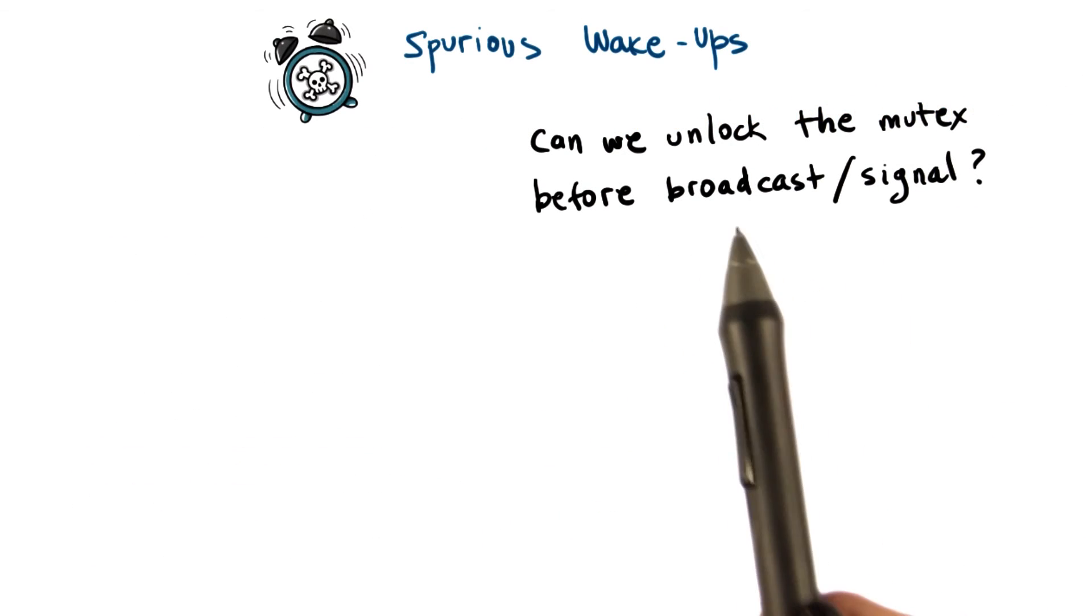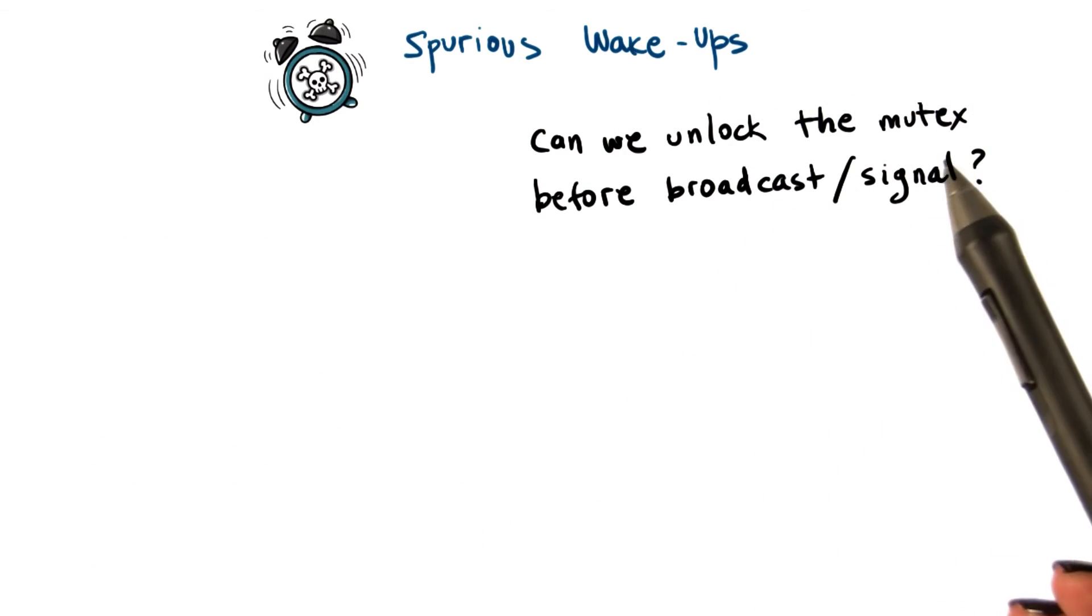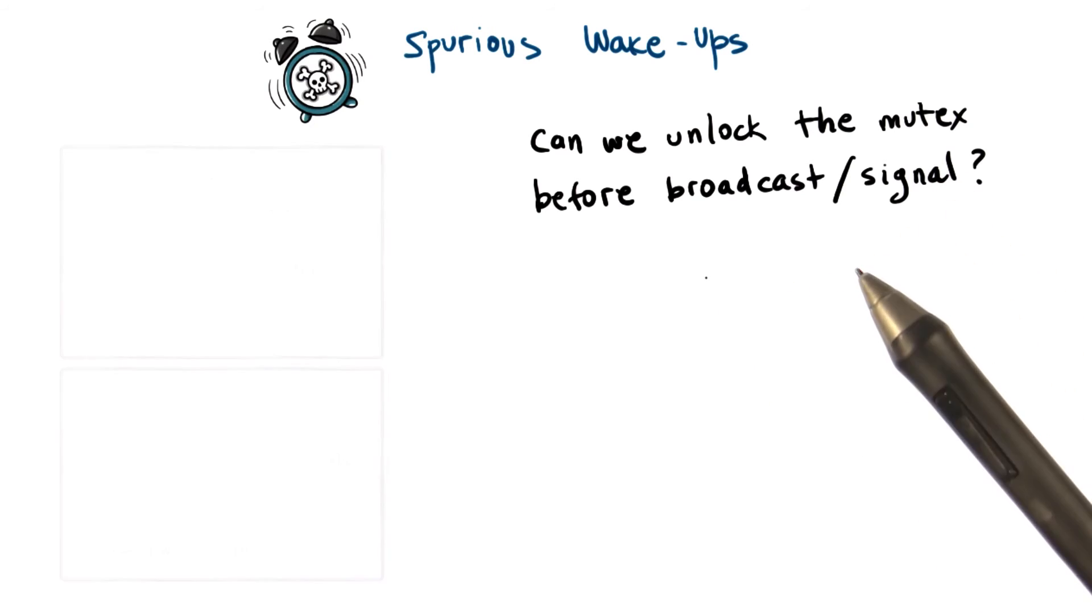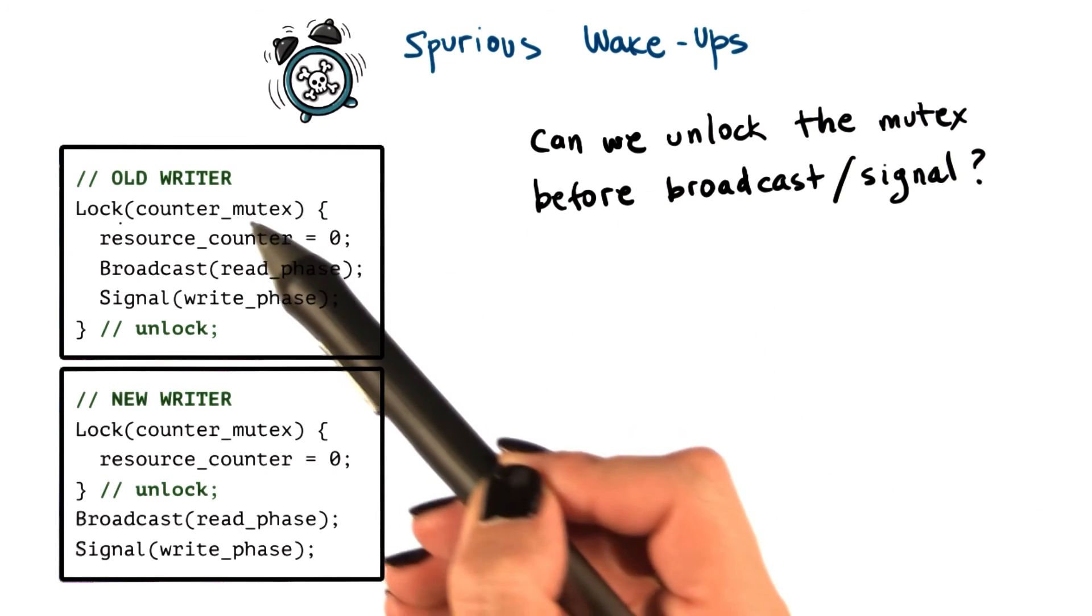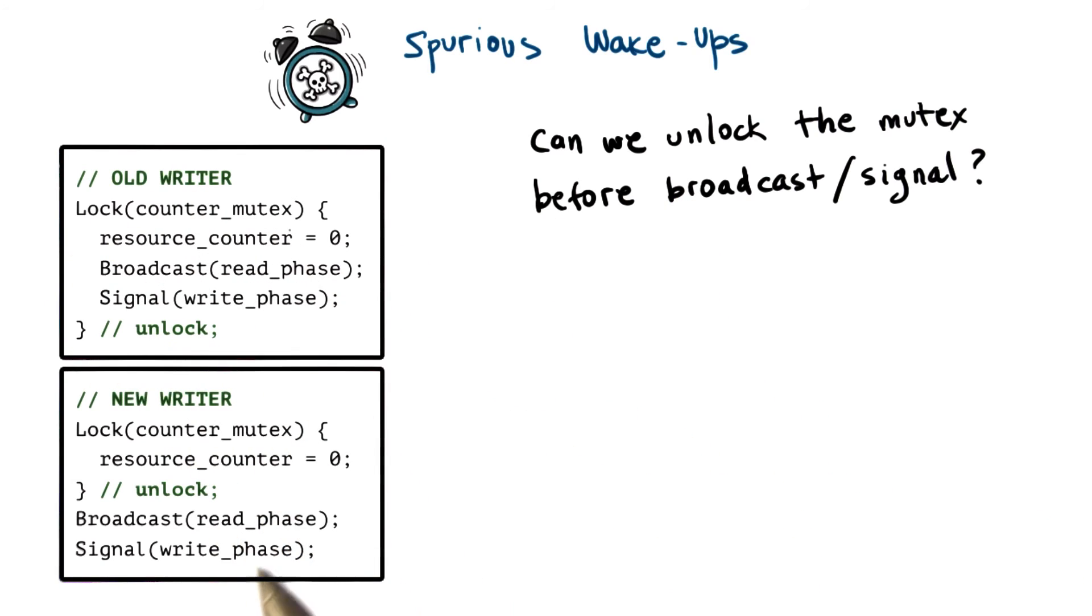So would this always work though? Can we always unlock the mutex before we actually broadcast or signal? For instance, by using this trick, we can transform the old writer code into this code where we first unlock and then we perform the broadcast and signal operations.